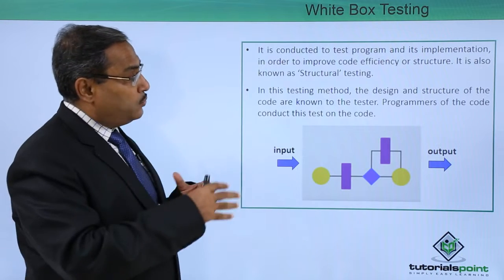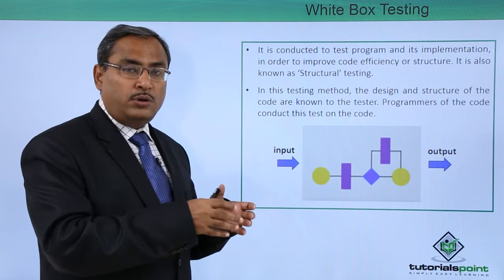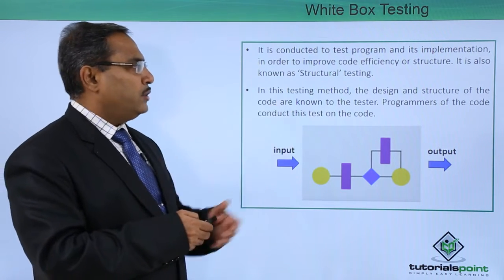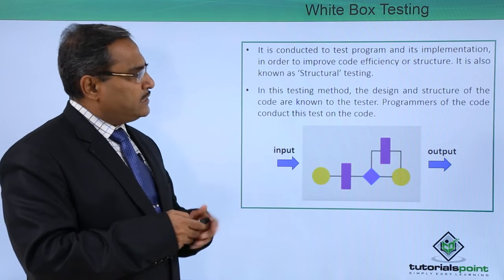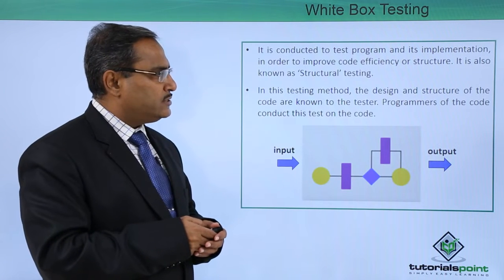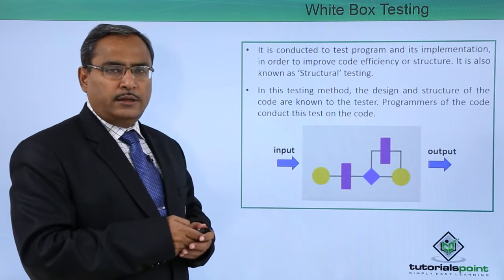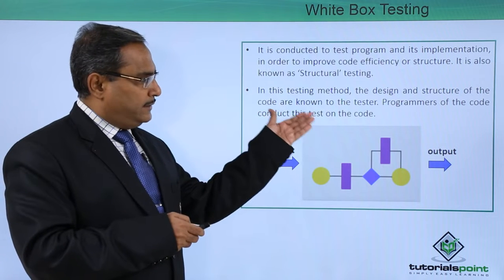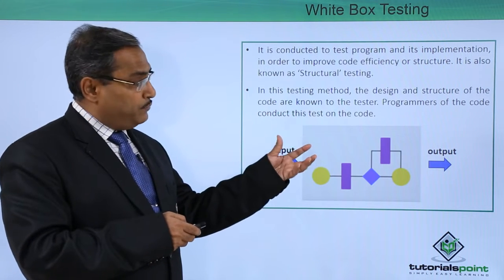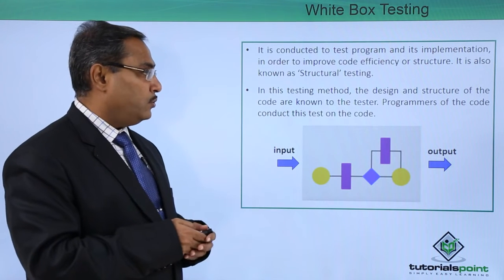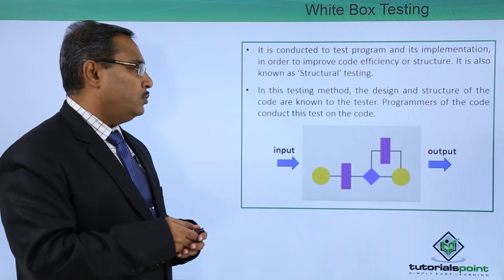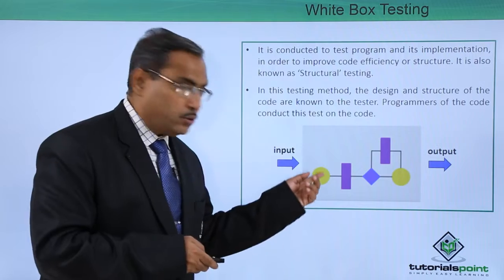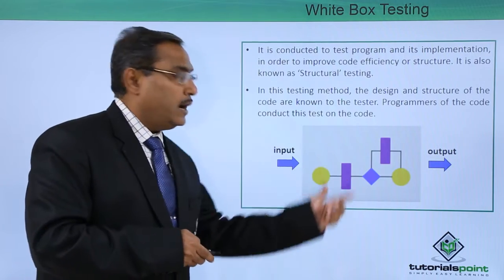Not only that, we are also trying to improve the efficiency of the code and the structure of the code when required. In this testing method, the design and the structure of the code are known to the tester. The tester must know the respective design and structure of the code. Programmers of the code conduct this test, and here we are getting the detailing of this code — the inputs and outputs are obtained.